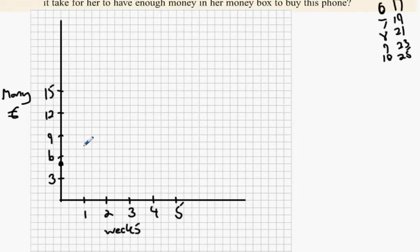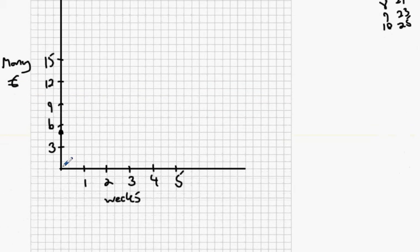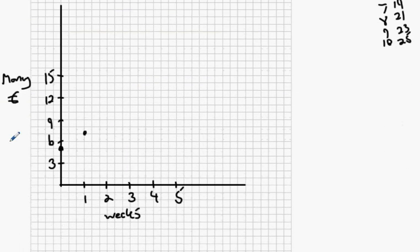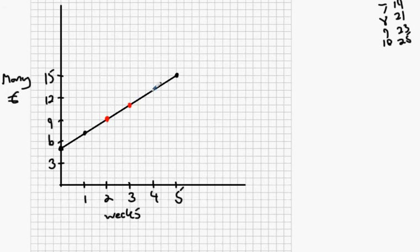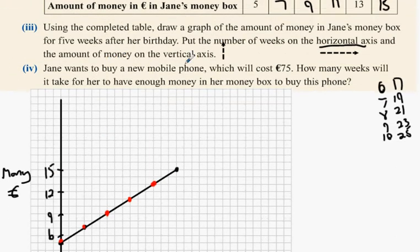The first point is (0, 5). What's the next one? (1, 7). I can just do the last one — (5, 15) — because it's a straight line, and then I can come back and dot them all in. That's the fast way of doing it.